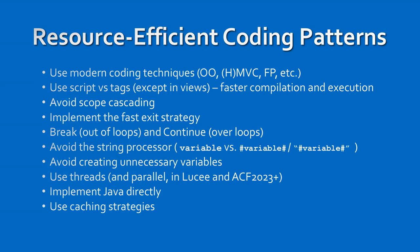Avoid scope cascading, implement a fast exit strategy, break out of loops, and continue over loops. Avoid using the string processor — instead of wrapping variables in hash signs inside strings when you don't need to, avoid it. Any time you use hash signs, it runs through the string processor, which takes extra CPU ticks and a bit more RAM. Over a thousand requests, that can add up pretty quickly.